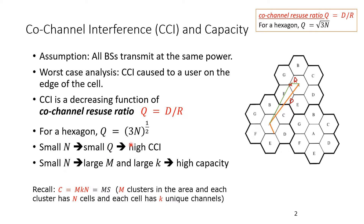If we make N small, we get small Q and therefore high co-channel interference. However, making N small also results in a large number of clusters and hence a larger K, giving high capacity. So making N small has the drawback of high co-channel interference but the benefit of high capacity. One has to trade off between capacity and interference.